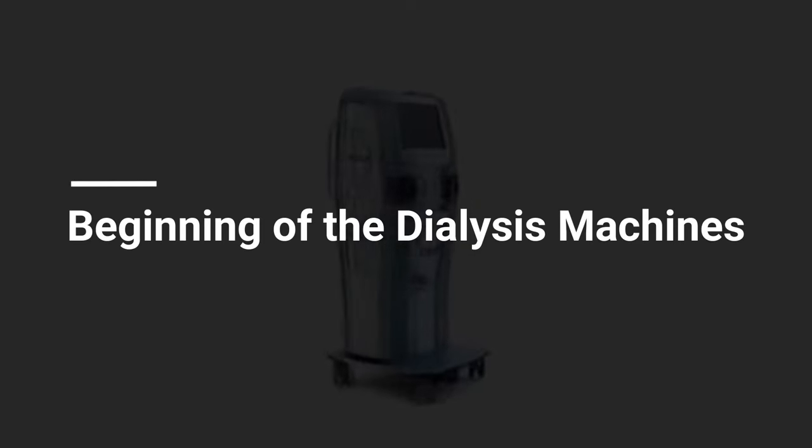Let's start from the beginning of the dialysis machine. The history of dialysis dates back to the 1940s. The first type of dialyzer, then called the artificial kidney, was built in 1943 by Dutch physician Willem Kolf.